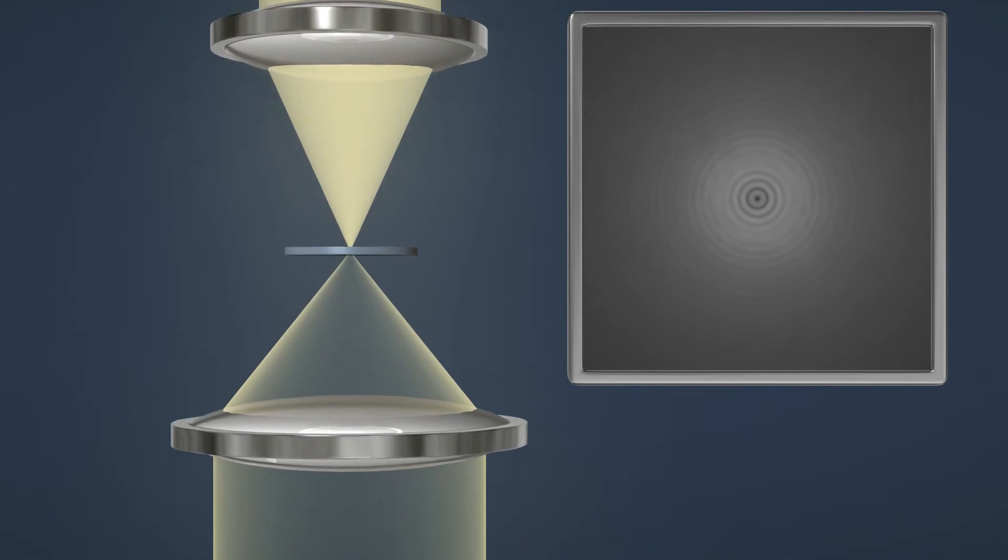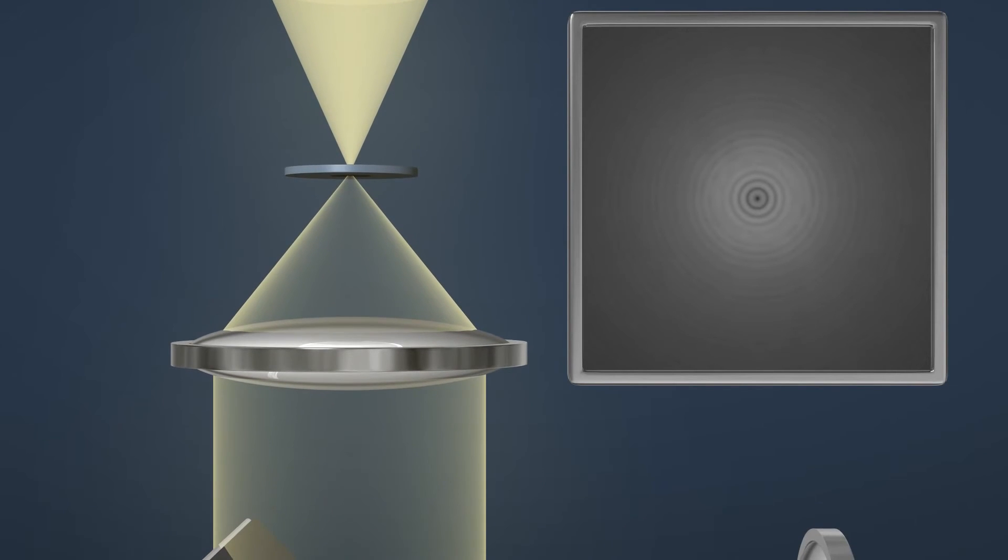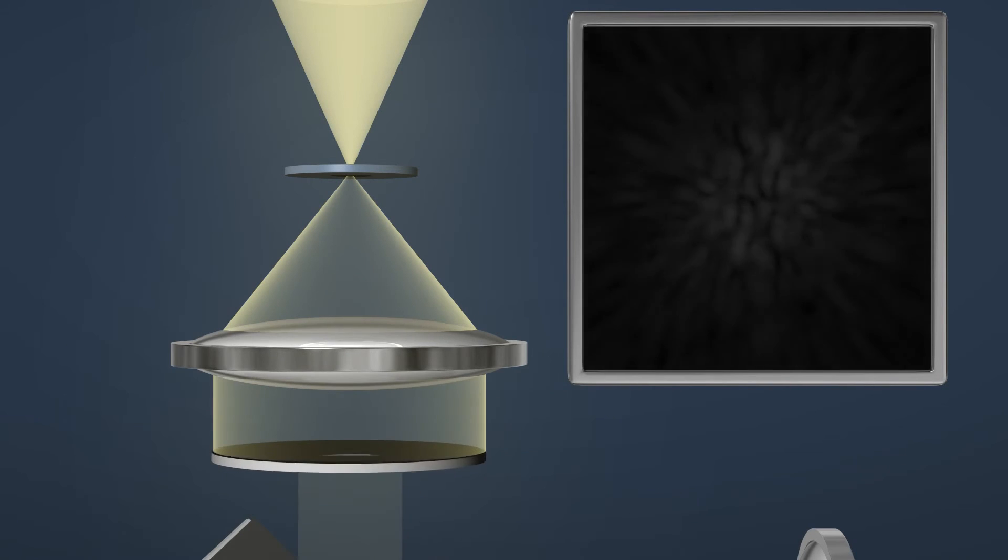Secondly, a coronagraph removes the effects of diffraction. When something that looks like a washer is placed into the light path, it blocks the light in the edges of the beam and the rings disappear.